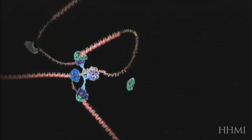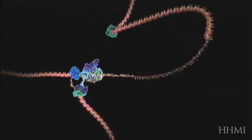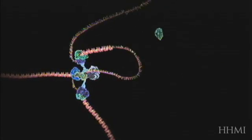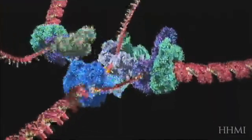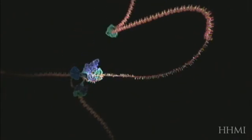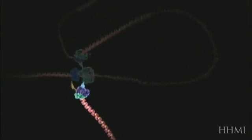Copying occurs at a localized region called the replication fork, which is a Y-shaped structure where new DNA strands are synthesized by a multi-enzyme complex. Here, the DNA to be copied enters the complex from the left. One new strand is leaving at the top of frame, and the other new strand is leaving at the bottom.